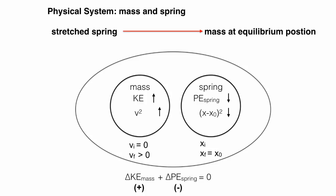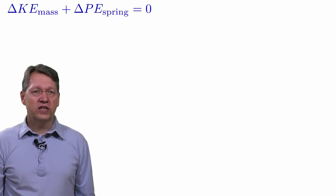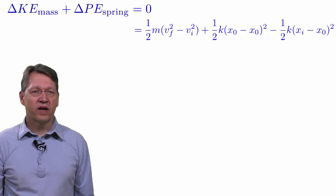The conservation of energy in this case is that the change in kinetic energy of the mass plus the change in potential energy of the spring add up to 0. We know that the change in kinetic energy is 1/2 m(v_final² - v_initial²).